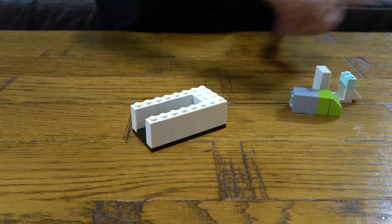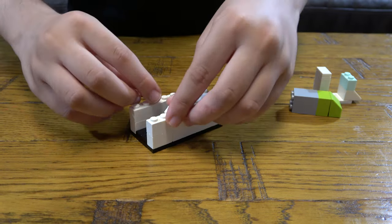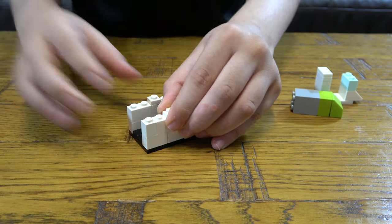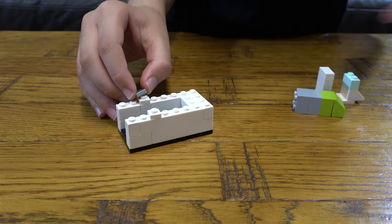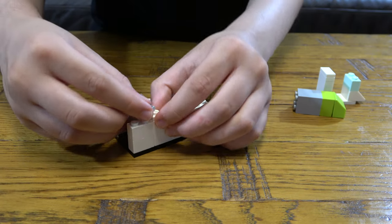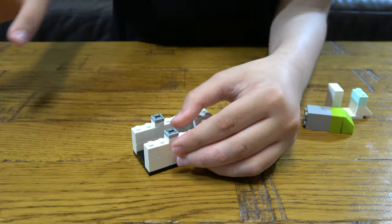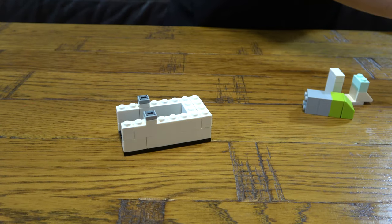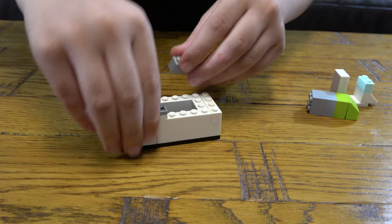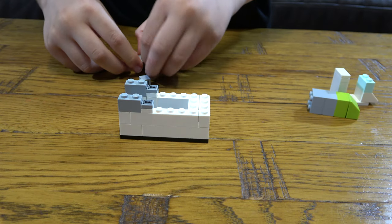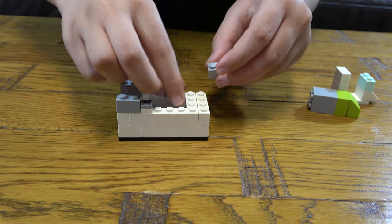And then next we place these two onto here. Then place these onto it like that. And then we place these onto it like that. Then get two of these like this and place this here.